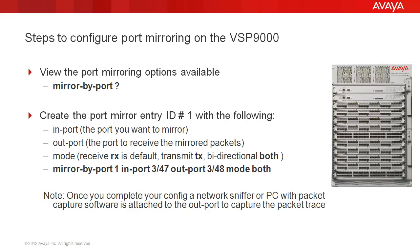In our tech tip, we will view the options available to us when configuring port mirroring using the question mark parameter. We will configure a port mirroring entry ID number to identify our specific port mirroring configuration. We will configure the in port which is the port on the system that we want to mirror, and we will identify the out port which is the port on the system which will receive the mirrored packets. We will select the mode of packet capture which in our case will be bidirectional. Here you have multiple options such as receive which is the default, transmit, or bidirectional.